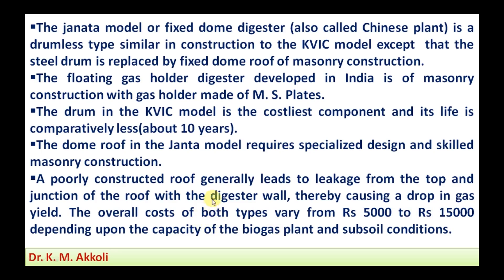The overall cost of both types varies from 5,000 to 15,000, with the lowest cost for the dome type, which also varies with capacity and subsoil conditions. The gas holding capacity varies from 4 cubic meters up to 25 cubic meters. Based on how much biomass is available in the form of cow dung or wet biomass, the appropriate type of biogas digester should be selected.